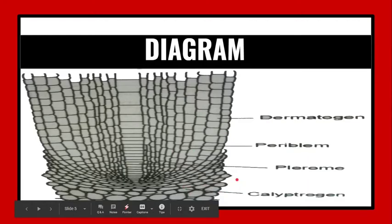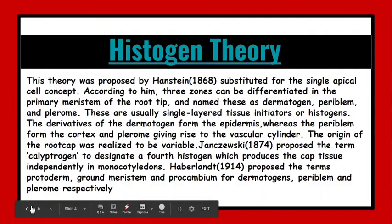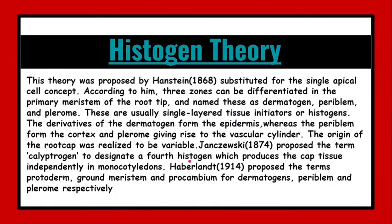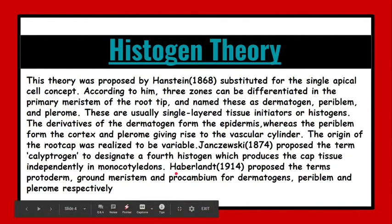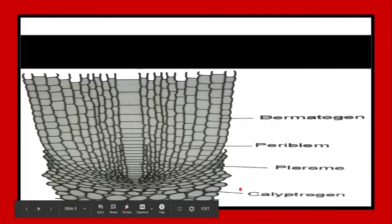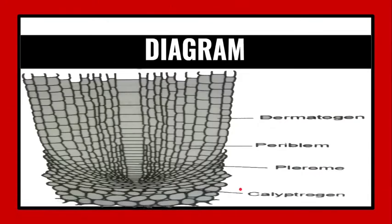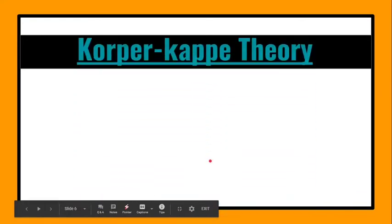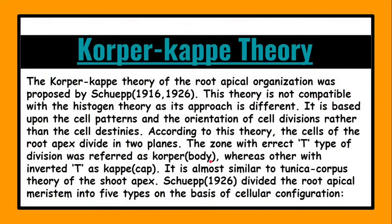We can see the different zones in the diagram. Dermatogen is the outer zone, second is periblem, and third is plerome. The fourth one is calyptogen and this is designated as the fourth histogen which produces the cap tissues in case of monocots. Haberlandt also proposed the terms protoderm, ground meristem, and procambium respectively.